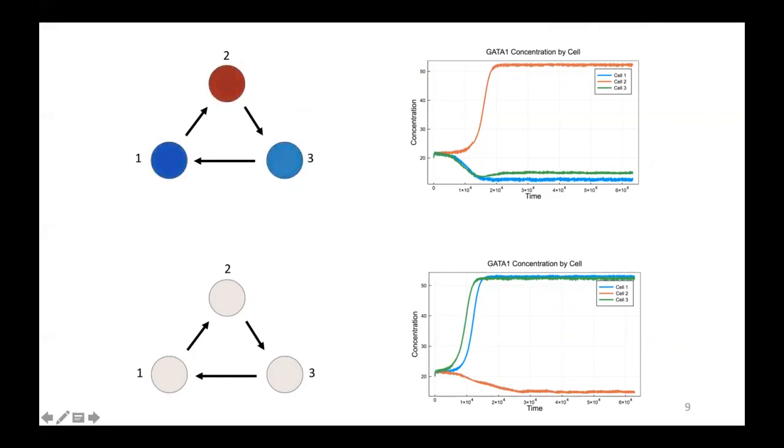And all of these simulations were produced using the same values of parameters. And so what we observe is that our model has become probabilistic. So it was, if we remove the signaling, it's just a differential equation model.